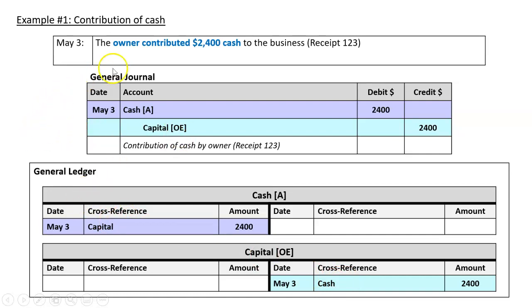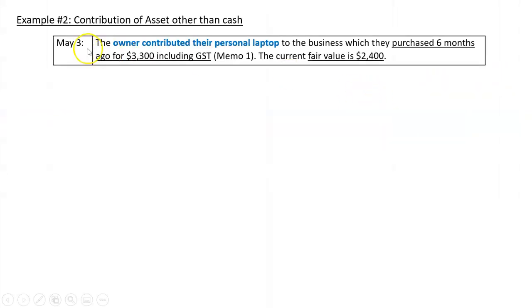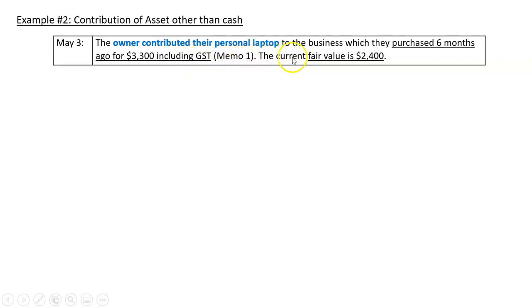All we've got to do now is change one thing. Instead of the owner contributing cash, let's deal with this situation - example number two: contribution of an asset other than cash. The owner contributed their personal laptop to the business, which they purchased six months ago for $3,300, including GST, memo one.